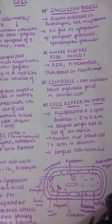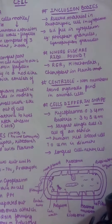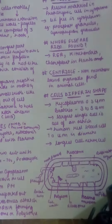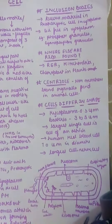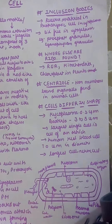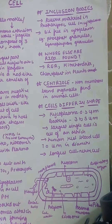This is not as important a topic from the board exam or 11th perspective, but because we are studying from the NEET perspective, we need to know about it equally. Inclusion bodies are the reserve material in the prokaryotic cell found free in the cytoplasm. Examples include phosphate granules and cyanophycin granules.